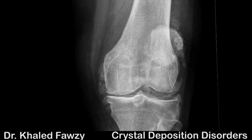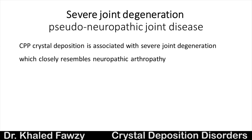A classic example shows chondrocalcinosis associated with osteoarthritis — osteoarthritis combined with calcium pyrophosphate deposition disease. A rare entity is severe joint degeneration that mimics neuropathic joints, called pseudoneuropathic joint disease, which is very rare and rarely encountered in practice.